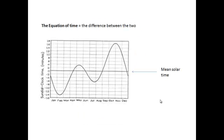The equation of time is the difference between the apparent solar time and the mean solar time. If the apparent solar time is ahead of the average, then the equation of time is positive. If the apparent solar time is behind, then the equation of time is negative.